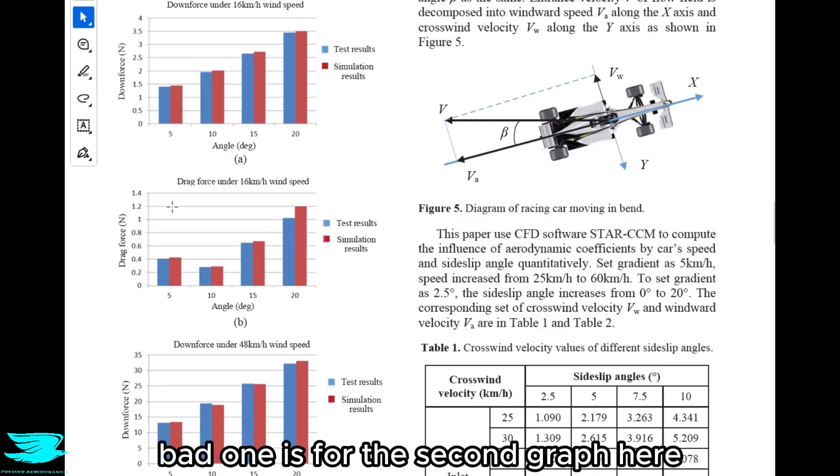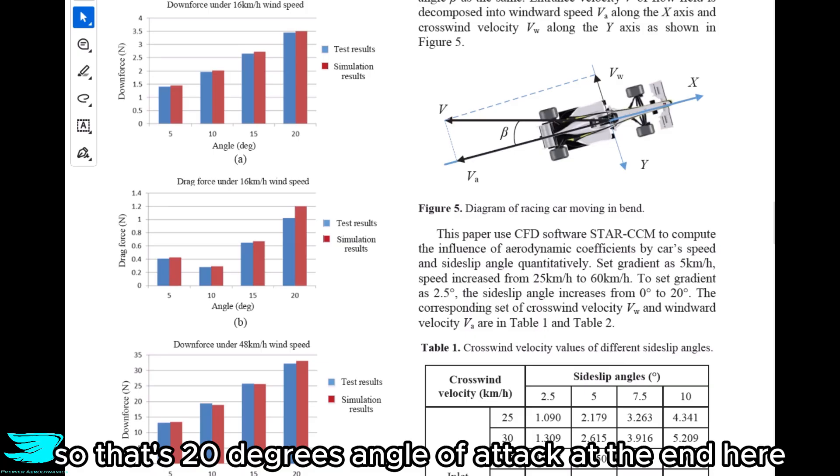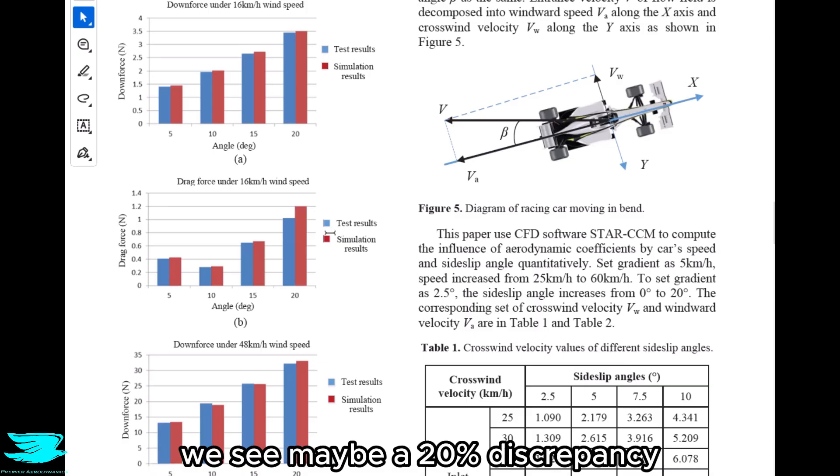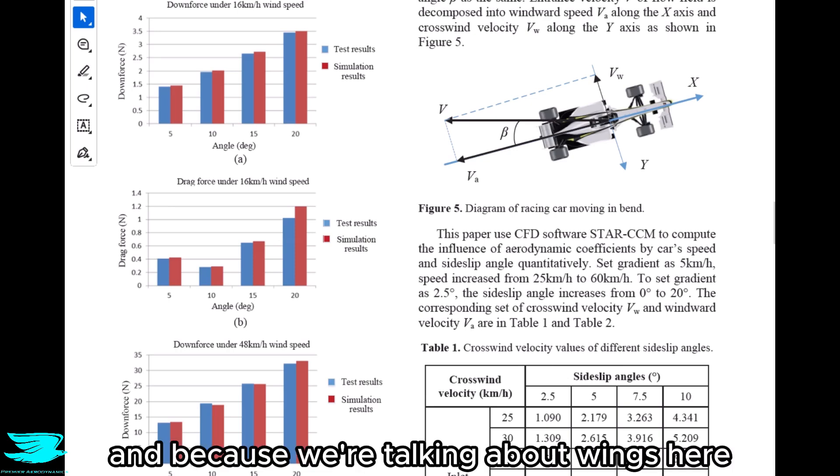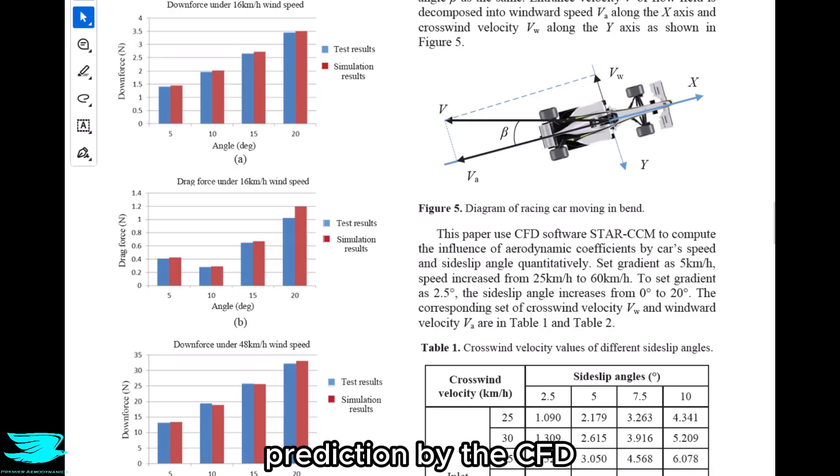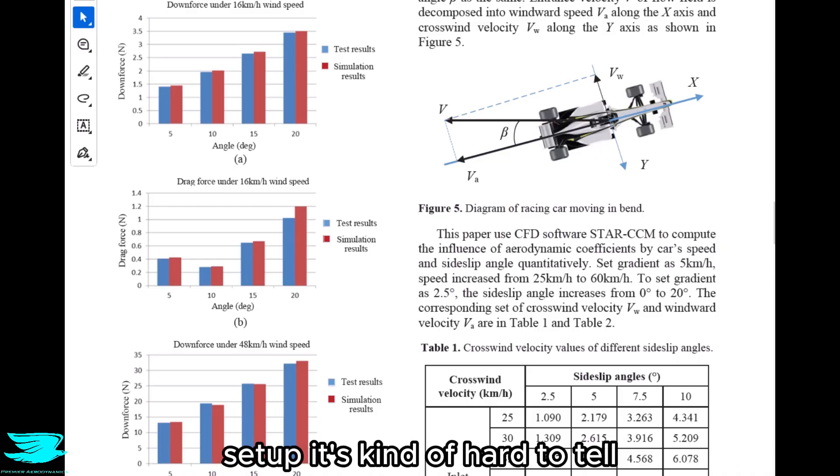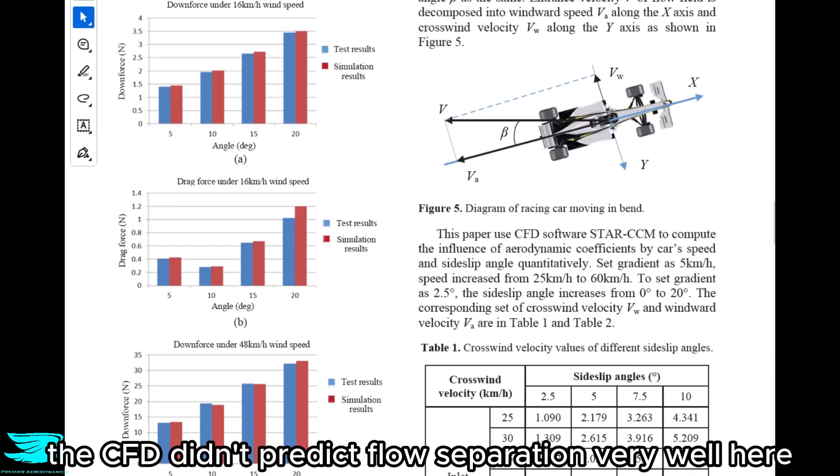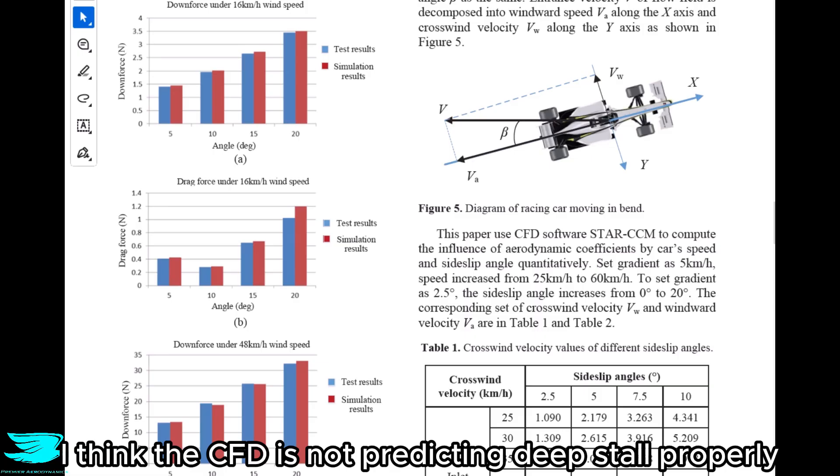Perhaps the only standout bad one is for the second graph here, which is for the drag at 16 kph. If we look at 20 degrees, so that's 20 degrees angle of attack, at the end here we see maybe a 20% discrepancy. That's a lot more than like the 5% or so we see across the board for everything else. And because we're talking about wings here, that might be because of inaccurate flow separation prediction by the CFD. And because we don't have many details about the CFD setup, it's kind of hard to tell. But other than that outlier, everything else looks pretty good. But I think the CFD didn't predict flow separation very well here. And in particular, I think the CFD is not predicting deep stall properly.